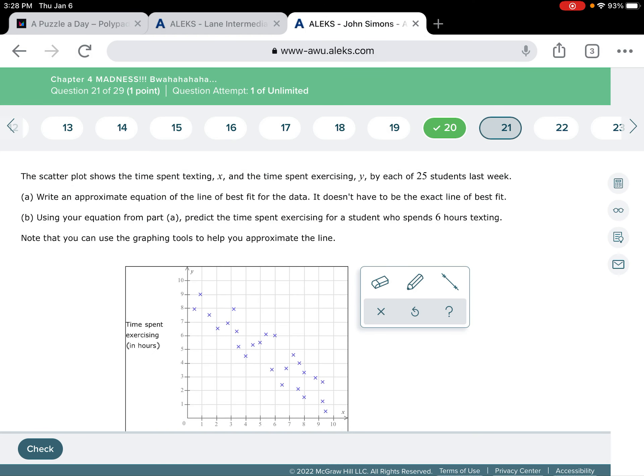So, this problem says the scatter plot shows the time spent texting X and the time spent exercising Y by each of 25 students last week. A, write an approximate equation of the line of best fit for the data.